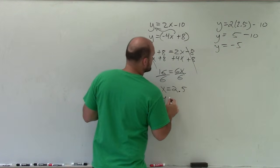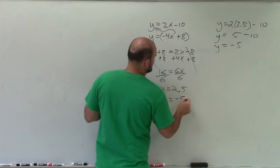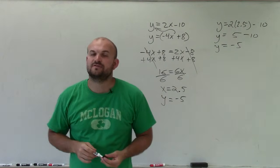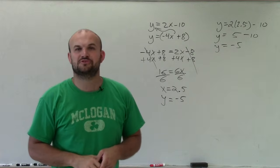So therefore, ladies and gentlemen, the solution set is x equals 2.5 and y equals negative 5 for the systems of equation by solving by substitution. Thanks.